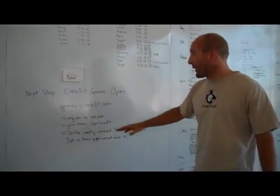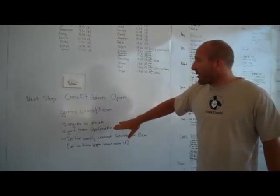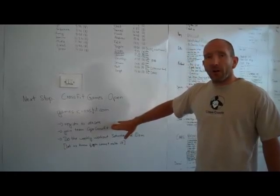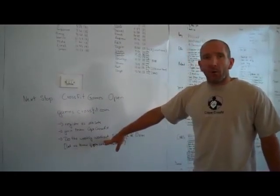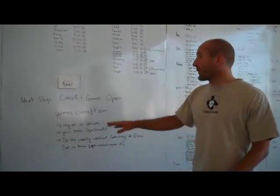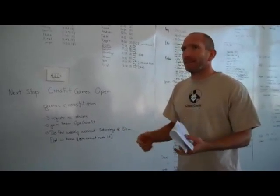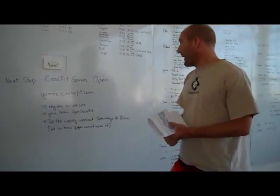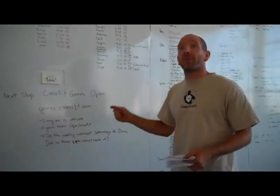Or you register as an athlete. What that gives you, I think it costs $5 for all six qualification workouts. And then you can see if you can make it to the next stage, which is the regional in Africa somewhere. You've got to register as an athlete. It's going to cost you $5. You join Team Cape CrossFit. And once you've done that, you can do a weekly workout with us that is posted on the CrossFit Games site.